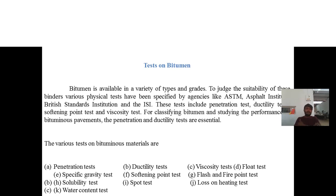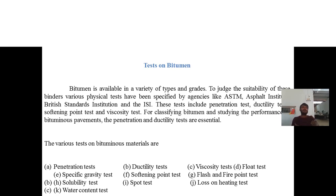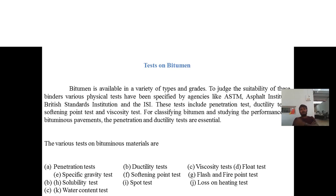Based on penetration test, different grades of bitumen are designated such as 30/40, 50/60, 60/70, 80/100, and 100/120, depending on the penetration value. These experiments have been discussed and conducted in the concrete and highway materials lab — please refer to the lab manual for detailed test procedures. Grading is also done based on viscosity, giving grades like VG-10, VG-20, and VG-30.